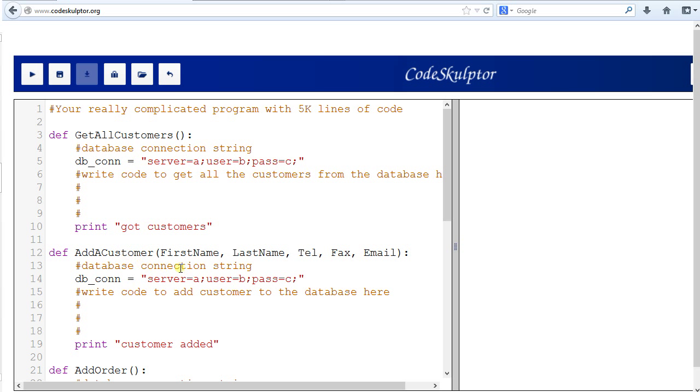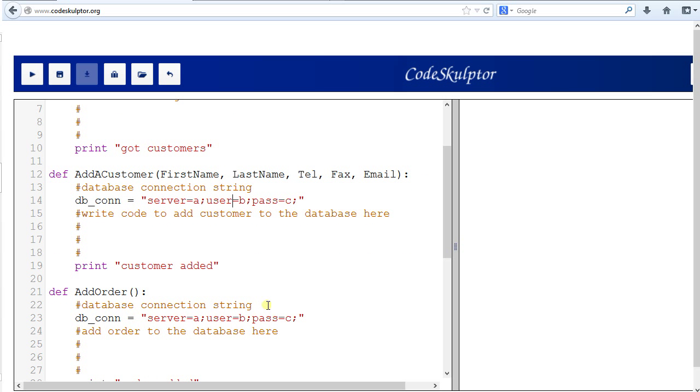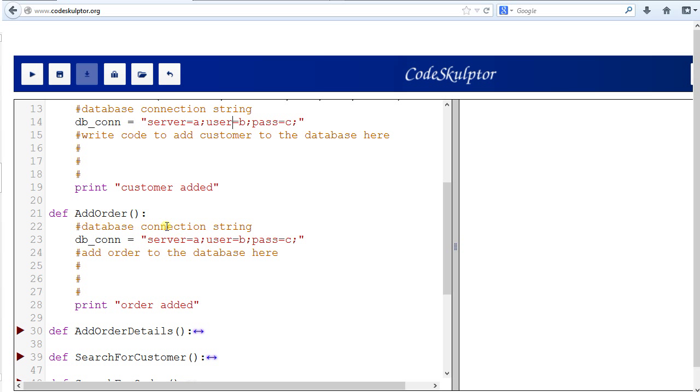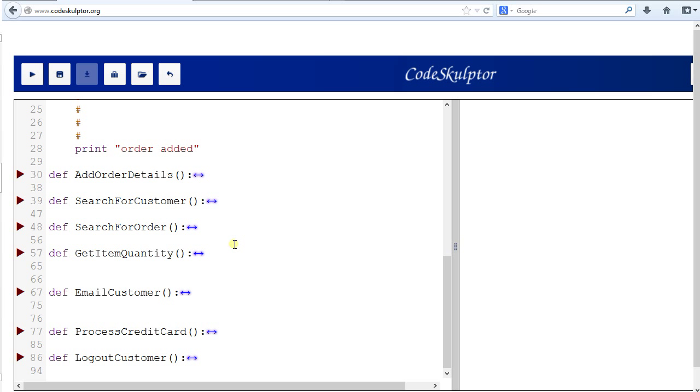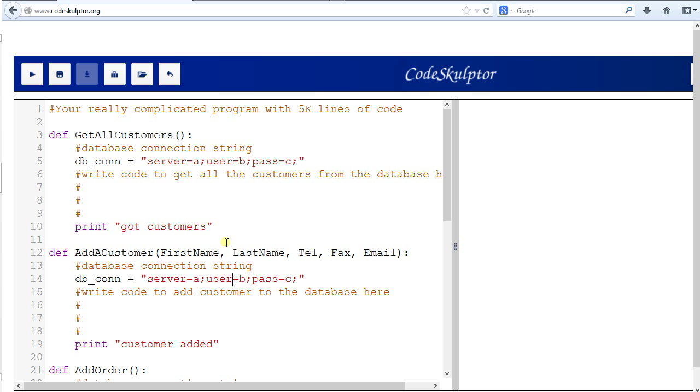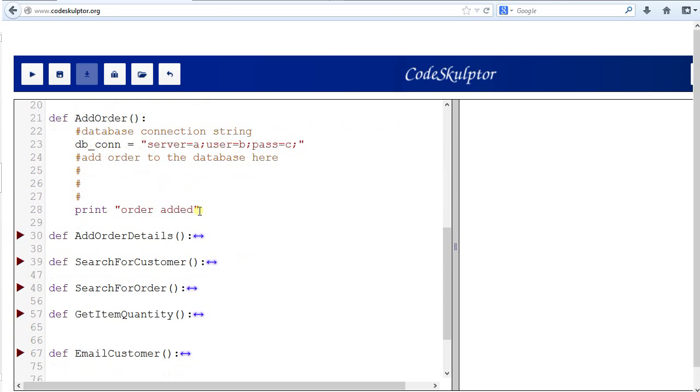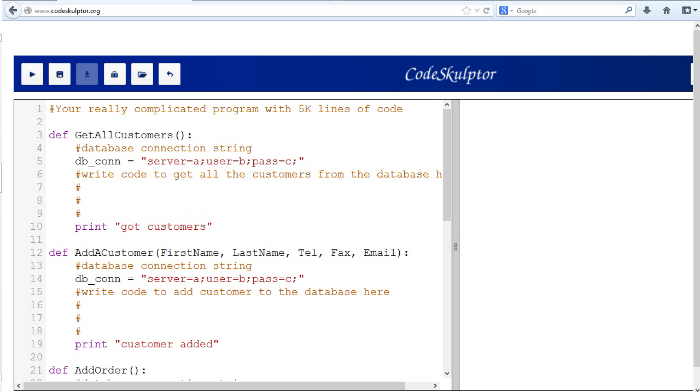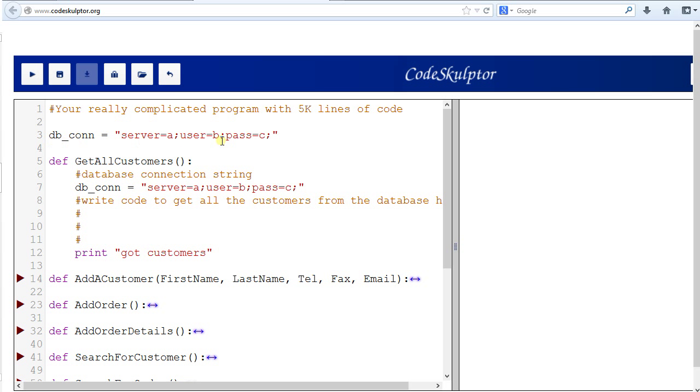Then, you might have another function to add a new customer into the database. And once again, you set up your database connection string, and you go to the database and add that new record in the database. You might have another function to add an order that a customer made. And you see me doing the same thing here. And you might have a lot of other functions by the time your program is done. So, after you've written all this code, say, the very next day, your database server goes down, and you need to switch all the customers, you need to switch your application to a different database. At that time, you would need to go through your program, look at all your database connection string instances in each of these functions, and modify it accordingly.